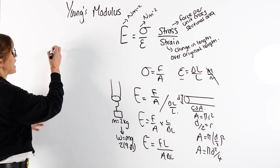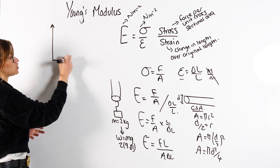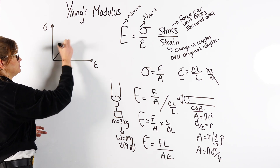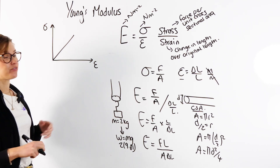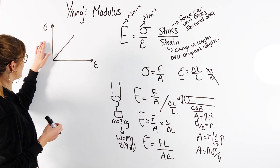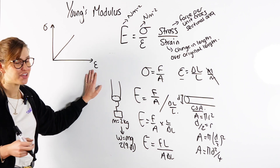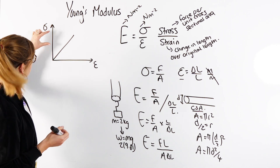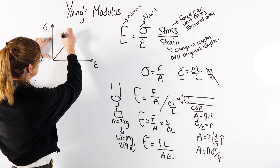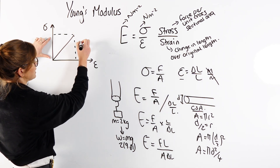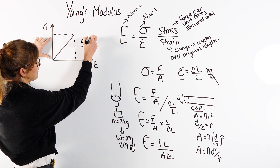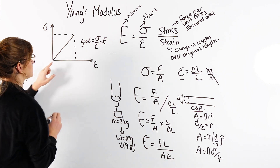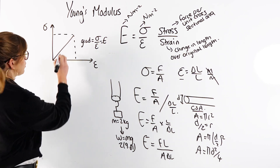You might also get asked about a graph. If you have a stress against strain graph, one thing you do is find the gradient of the line. The gradient is the vertical — stress — divided by the horizontal — strain. So the gradient gives you Young's Modulus.